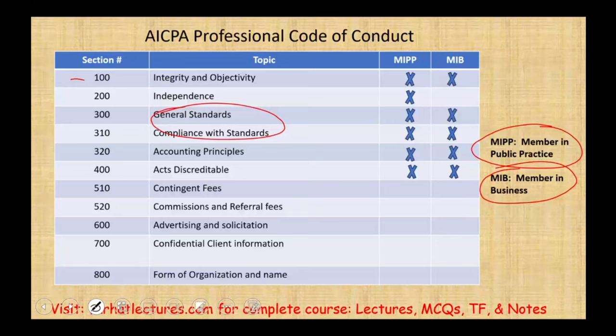Contingent fees only apply to people in public practice because they issue an attestation opinion. Commissions and referral fees — only members in public practice. Advertising and solicitation — only members in public practice. Client confidential information and form and name of organization — both apply only to members in public practice.